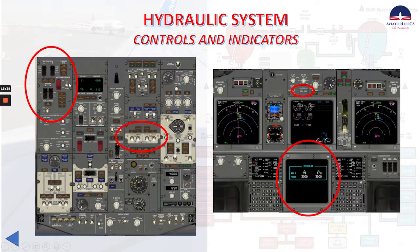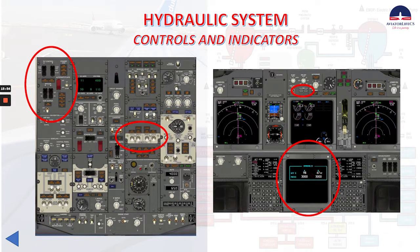Now let's quickly review the next slides. We have the feel differential pressure light. It is armed when the trailing edge flaps are up or down. When illuminated amber, it means excessive differential pressure in the elevator feel computer. Excessive differential pressure can be caused by erroneous activation of the elevator feel shift module.